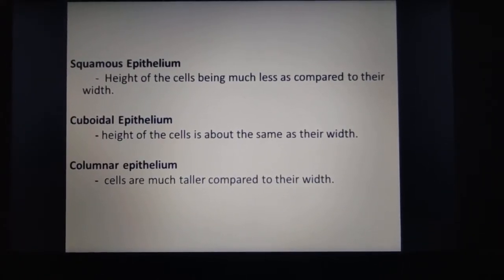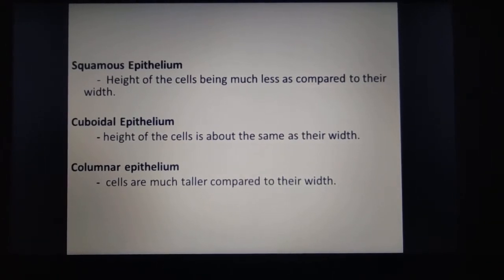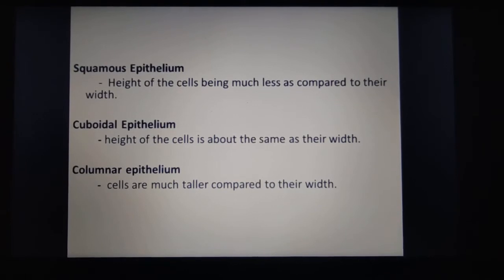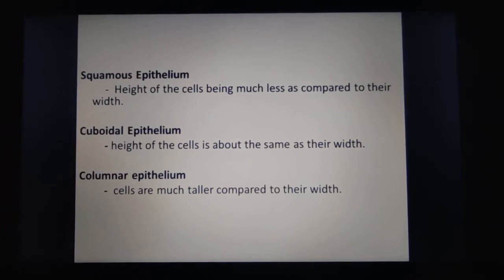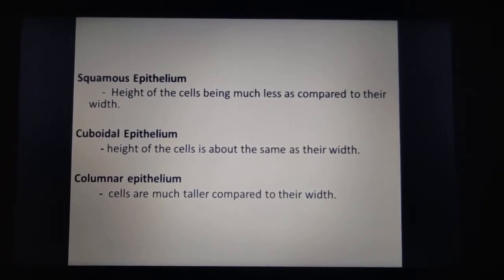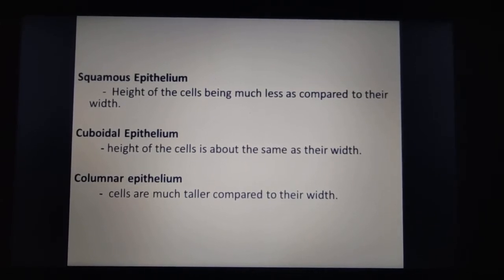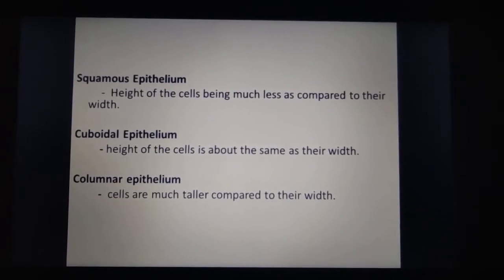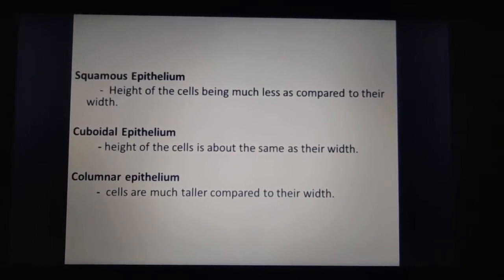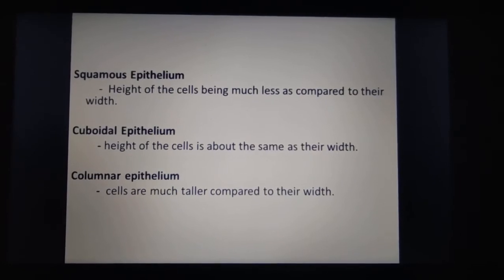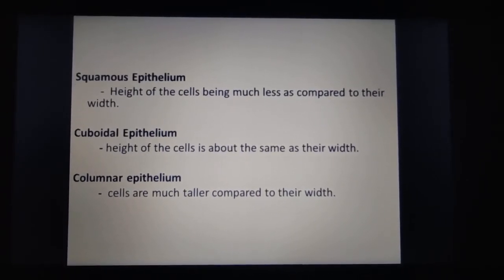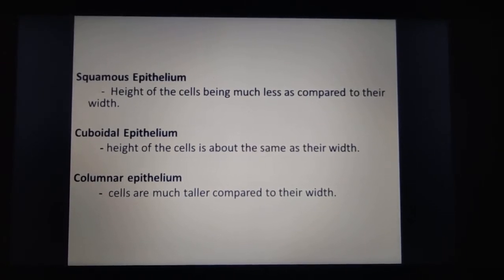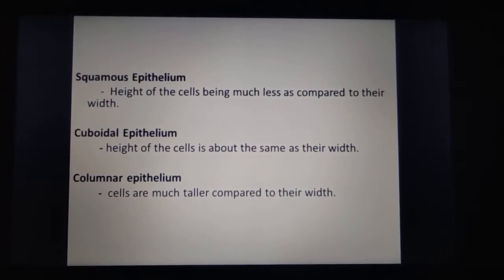Squamous means flattened — the height of the cells is much less compared to their width. In cuboidal epithelium, the height of the cell is about equal to its width. In columnar epithelium, the cells are much taller compared to their width. These are the main differences between squamous, cuboidal, and columnar epithelium.